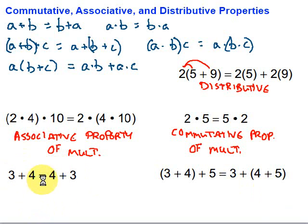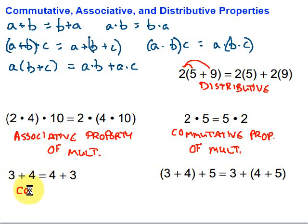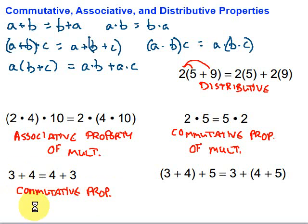What's the difference between the left and the right here? We've got 3 plus 4 on one side and 4 plus 3 on the other — they're just moved around again. So this is another example of the commutative property. Since we're adding, it's the commutative property of addition.